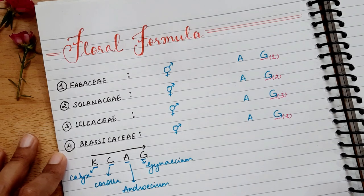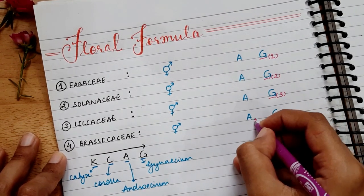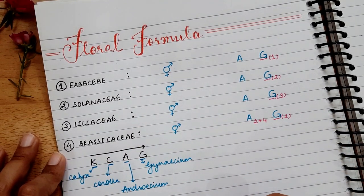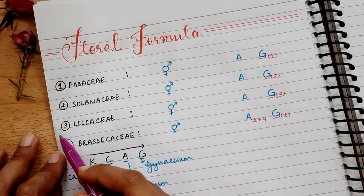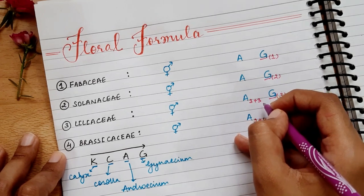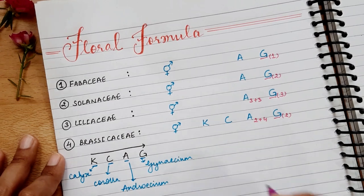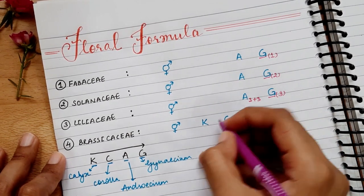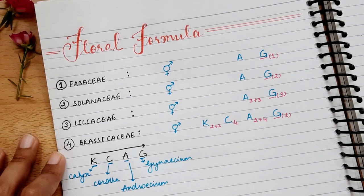So we will add 2 plus 4. Now for Androecium, we will start with class. Now, for A to write G, we will add a serial number in G. So here will be 2 plus 4. So for Liliaceae, we will add 3 plus 3. Here, we will add K and C. So I have told you that in Brassicaceae, everything is 2 and 4. So we will add C to 4, and K to 2 plus 2, which is 4.